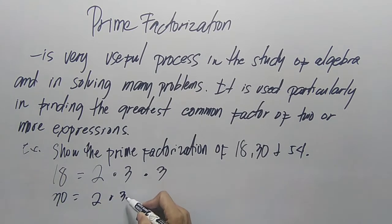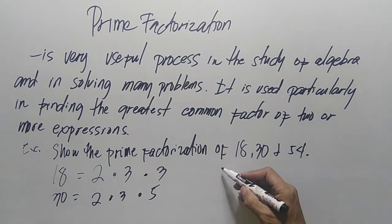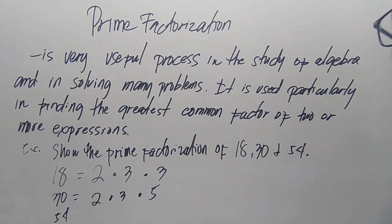For 30, it's 2 times 3 times 5. That's 6 times 5, which is 30. For 54, we have 2 times 3 times 3 times 3. That's 6 times 3 equals 18, times 3 equals 54.